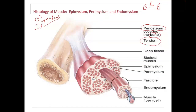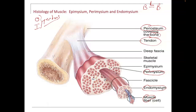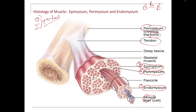Now let's look at some of the microscopic parts. You're going to be hearing terms called muscle fibers, endomysium, perimysium. So we have an endomysium, a perimysium, and all the way on the outside, an epimysium. Endomysium is most inner, perimysium is in the middle, epimysium is on the outside. These are layers of tissue that protect the deepest part of the muscle.